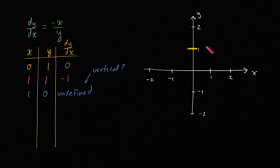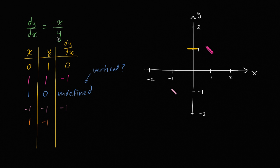Let's try the point (−1, −1). We have negative negative one, which is one over negative one, so you would have a slope of negative one there. What about (1, −1)? Well now it's negative one over negative one, so your slope is now one — if a solution goes through this, its slope would look like that. We could also do (2, −2), which is going to have a slope of one as well.